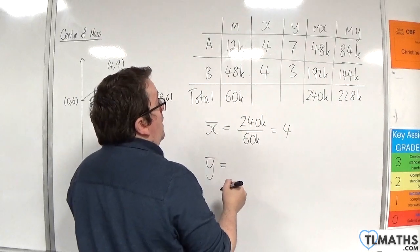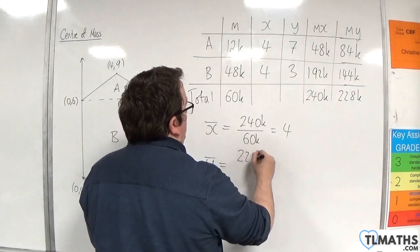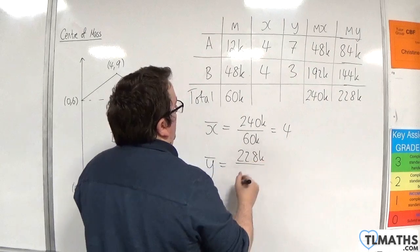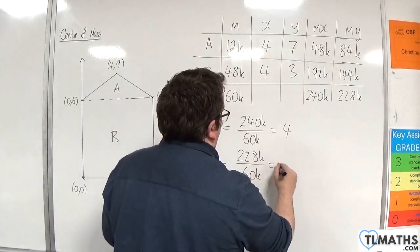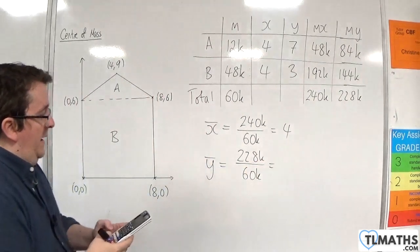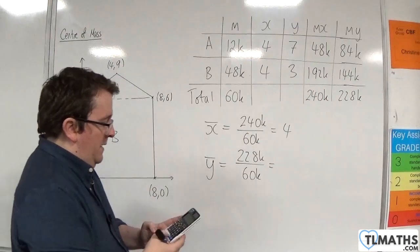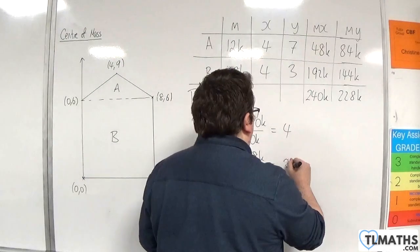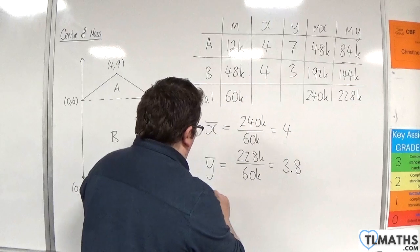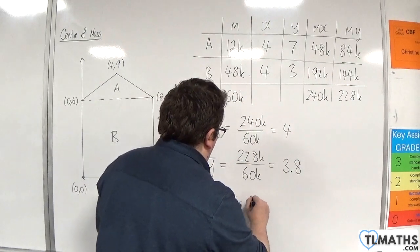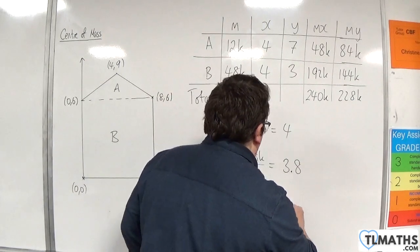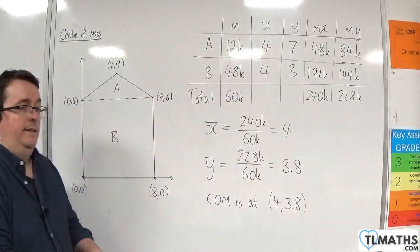And then, the average of the y's would be 228k over 60k. So, 228 divided by 60, and so that's 3.8. So, the centre of mass is at 4, 3.8.